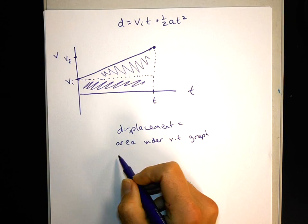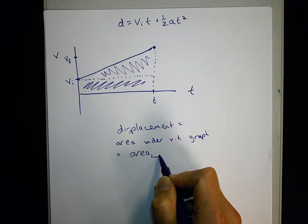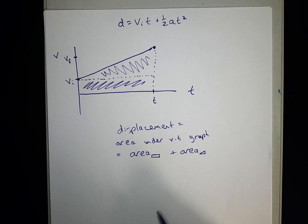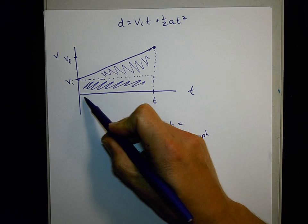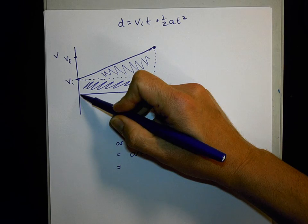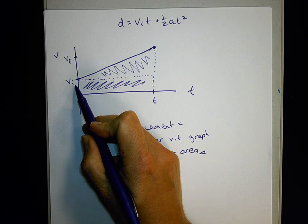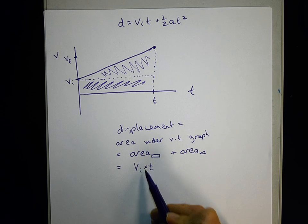The area under this particular velocity graph is two areas added together, it's the area of that low rectangle, plus the area of that top triangle. For a rectangle, area is length times width. So the length of this is t, the width is v_i. So if I multiply length times width, v_i times t, that's that first area.